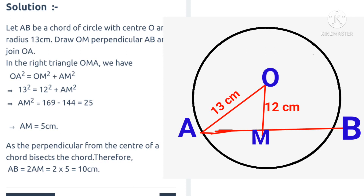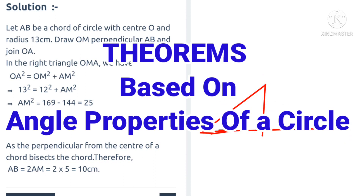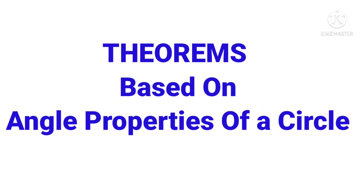As the perpendicular from the center of a circle to a chord bisects the chord, therefore AB = 2 × AM = 2 × 5 = 10 centimeters. So the length of the chord is equal to 10 centimeters. In the next video, I will explain some more theorems of circle along with solutions of questions.